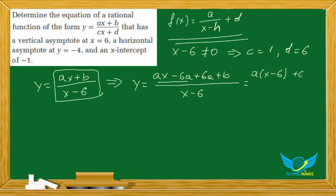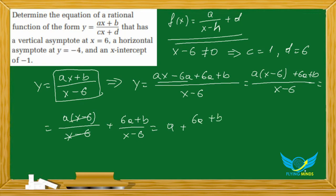Now we're going to split the x minus 6 into two terms. We get a times x minus 6 over x minus 6 plus 6a plus b over x minus 6.